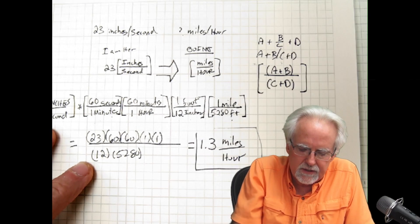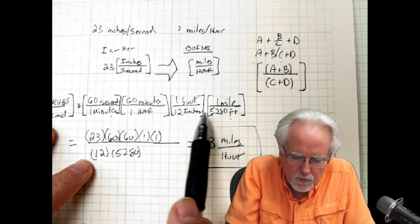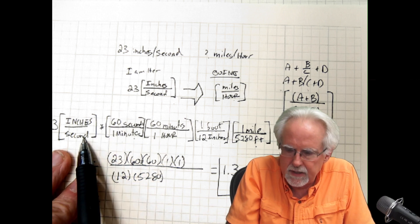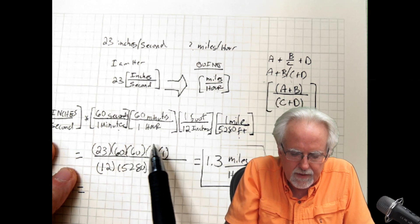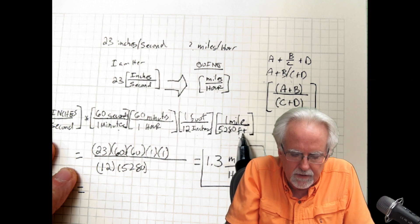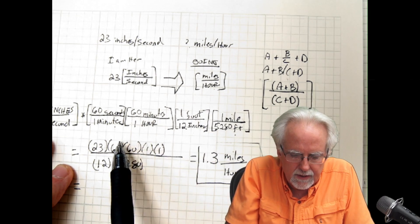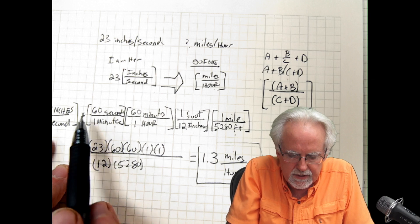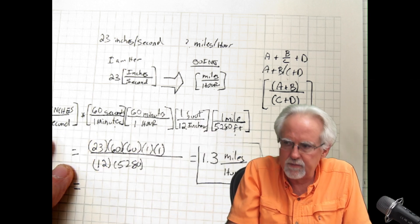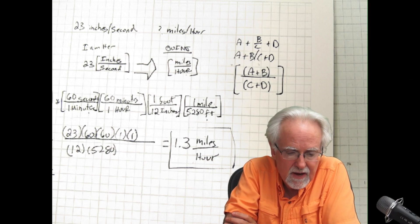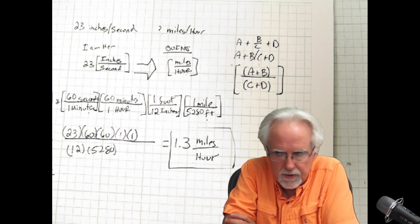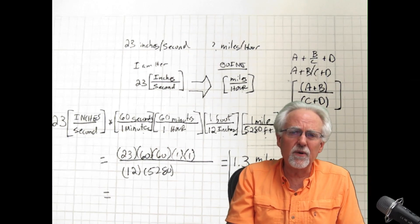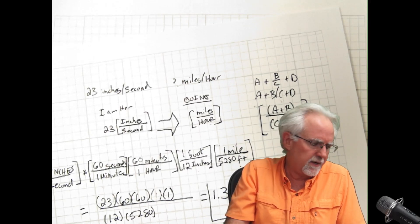Let's verify: foot over foot makes 1, minute over minute makes 1, second over second makes 1, inches over inches make 1, and we're left with miles per hour. So 23 inches per second equals 1.3 miles per hour. With this method, you can go from any set of dimensions to any other set of dimensions.